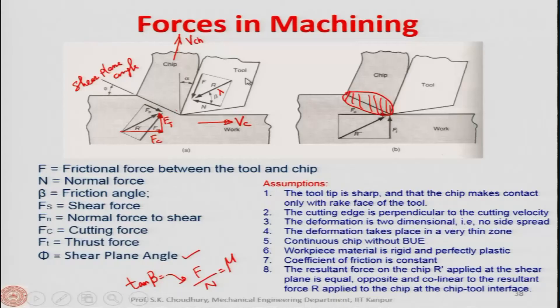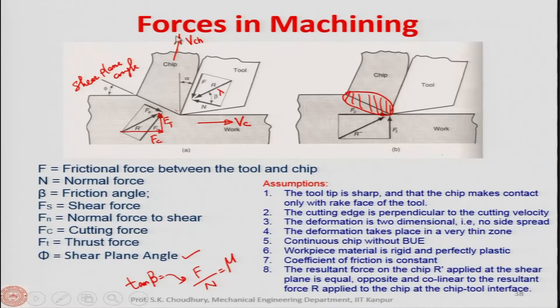When the excess work piece material is removed in the form of a chip, and the chip is moving over the rake face of the tool at a constant velocity VCH, the work piece material has to be rigid, perfectly plastic, and homogeneous. VCH moves at constant velocity only when the resultant forces acting on the chip from the tool side through the rake face and from the work piece side through the shear plane are equal, opposite, and collinear.